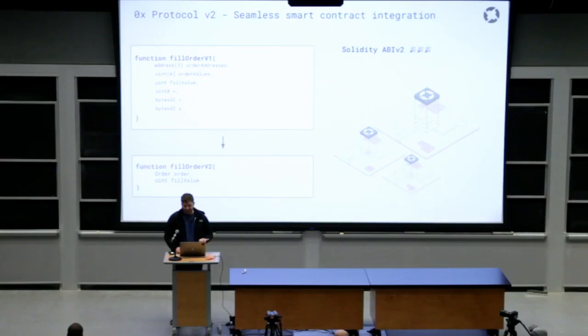Second, Solidity ABI v2 is a new experimental feature in the Solidity programming language that allows us to pass structured data between smart contracts. And it creates a very simple and beautiful smart contract API, which will make it very easy for independent developers to seamlessly integrate their own smart contracts into 0x protocol.